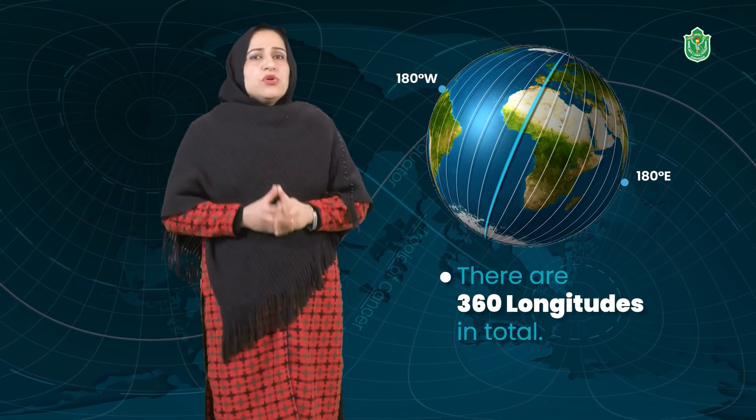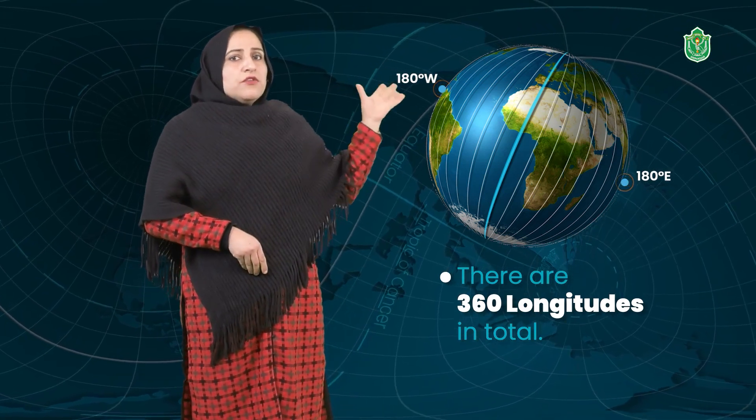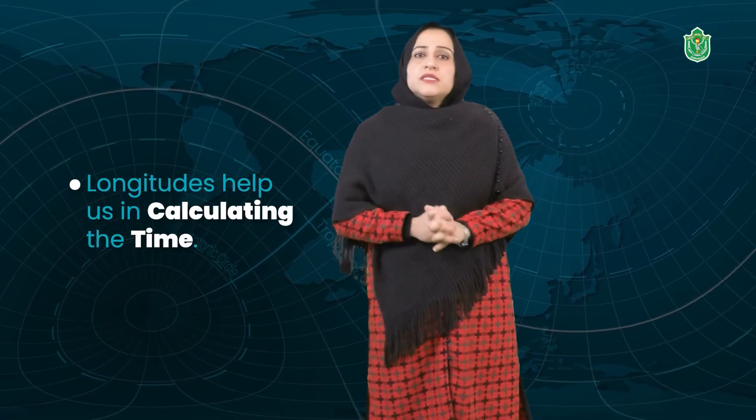These longitudes are very far apart near the equator, but as we move from the equator towards the poles, the distance goes on decreasing until they meet at a point — that is the north pole and south pole. These longitudes are also important because with the help of longitudes, we are able to calculate the time.